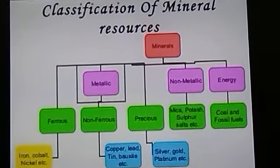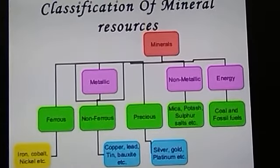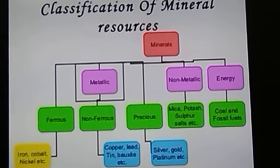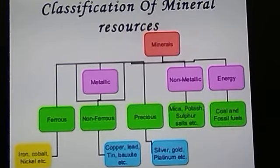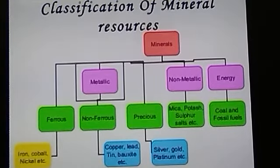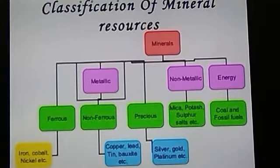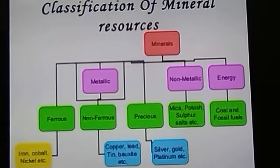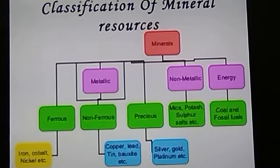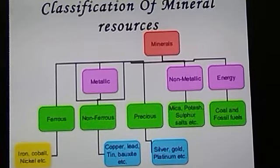Here you can see the classification of mineral resources. Minerals are of two types: metallic minerals and non-metallic minerals. Metallic minerals are of again two types — ferrous and non-ferrous. Ferrous examples are iron, cobalt and nickel. Non-ferrous examples are copper, lead, tin, bauxite, etc. The third type is precious metallic minerals: silver, gold and platinum, from which jewellery and coins are made.